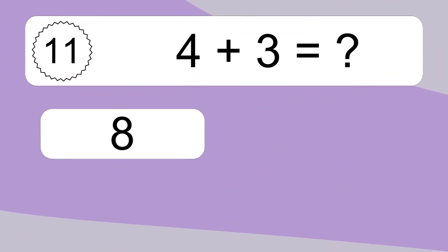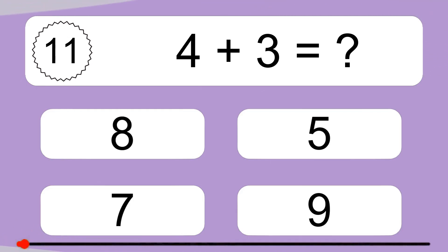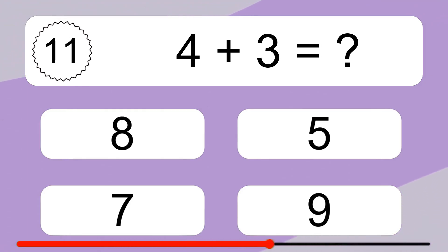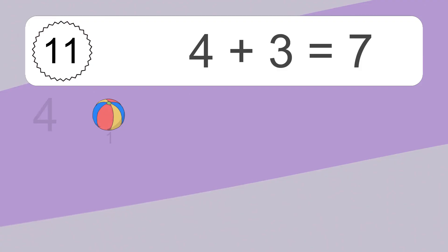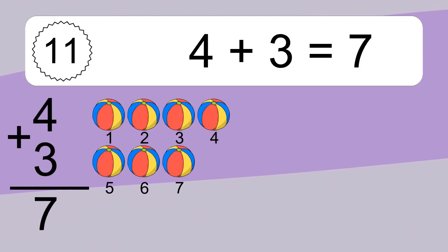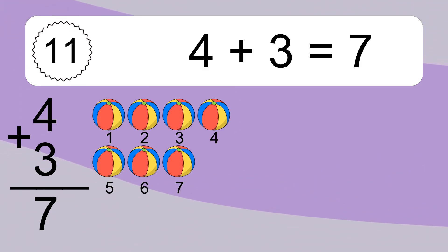4 plus 3 equals what? 4 plus 3 equals 7. Let's count it. 1, 2, 3, 4, 5, 6, 7.